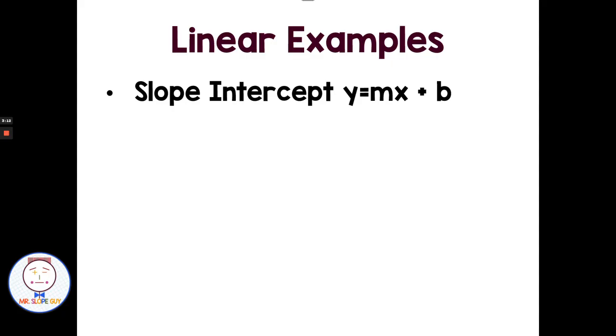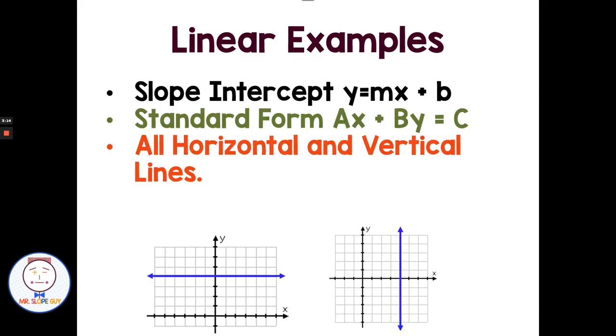So things that were linear, that was slope-intercept form, standard form, horizontal and vertical lines. Those are going to be where you see linear, one straight line. All those other weird things in the equation or different shapes that are not a single straight line. Then that's when you got non-linear.